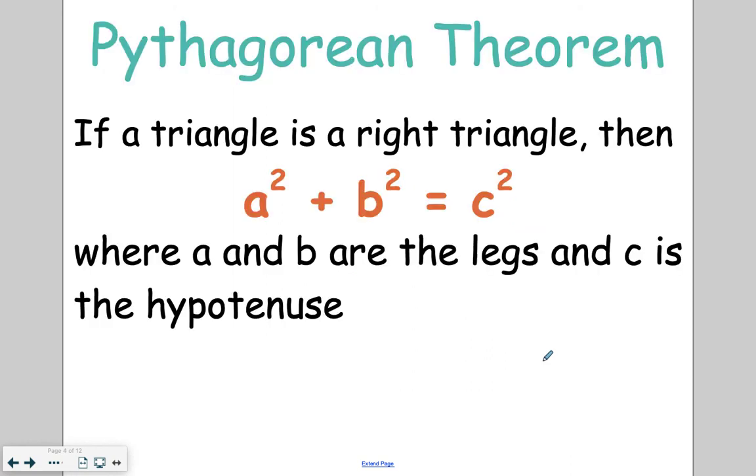The Pythagorean Theorem states that if a triangle is a right triangle, so if the biggest angle is 90 degrees, then A squared plus B squared equals C squared, where A and B are the two legs of the triangle, and C is the hypotenuse.